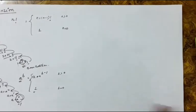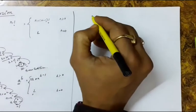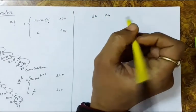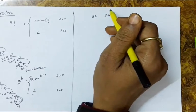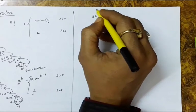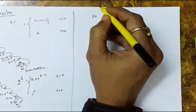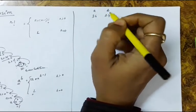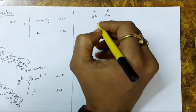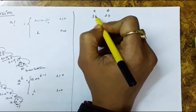Now let us take another example — finding the GCD of two numbers, say 36 and 24. GCD means the greatest common divisor. Let us say A is 36 and B is 24. The method is simple: subtract the smaller term from the bigger one. So 36 minus 24 gives 12.